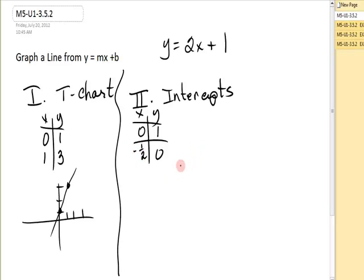I kind of picked one that's not so friendly, and you wouldn't be asked to graph it this way, but I'm just going to show you. 0 comma 1 is the y-intercept, negative 1 half comma 0 is the x-intercept, and you would have that. And you can see that it's the same line.